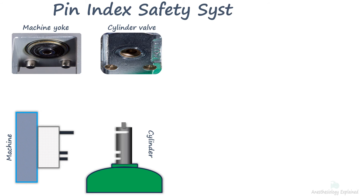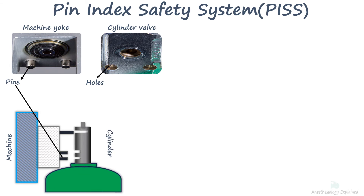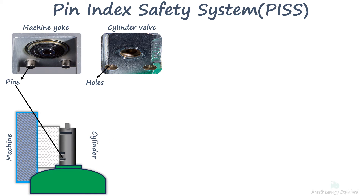The pin index safety system, or PISS for short, is a mechanism used for attaching cylinders to regulators and anesthesia machines. It involves two precise holes in the cylinder valves that perfectly align with two pins on the receiving yoke. When these pins and holes don't align, the cylinder's port won't fit snugly into the nipple of the hanger yoke. This system was devised to prevent the inadvertent placement of a cylinder containing the wrong medical gas onto the hanger yoke of an anesthesia machine designed for a different gas.